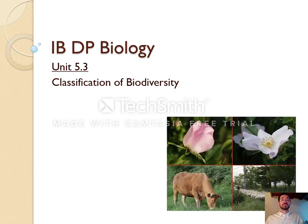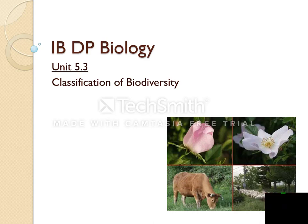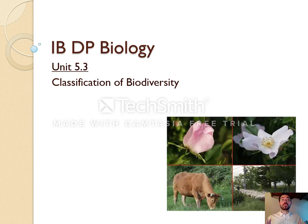Hello everybody, and welcome to our lesson on topic 5.3, Classification of Biodiversity. In today's lesson we're going to be talking about taxonomy. A taxa is a group of living things, so in taxonomy we're going to be talking about how scientists organize life, how we decide which species are more closely related to others, and how we name them accordingly.